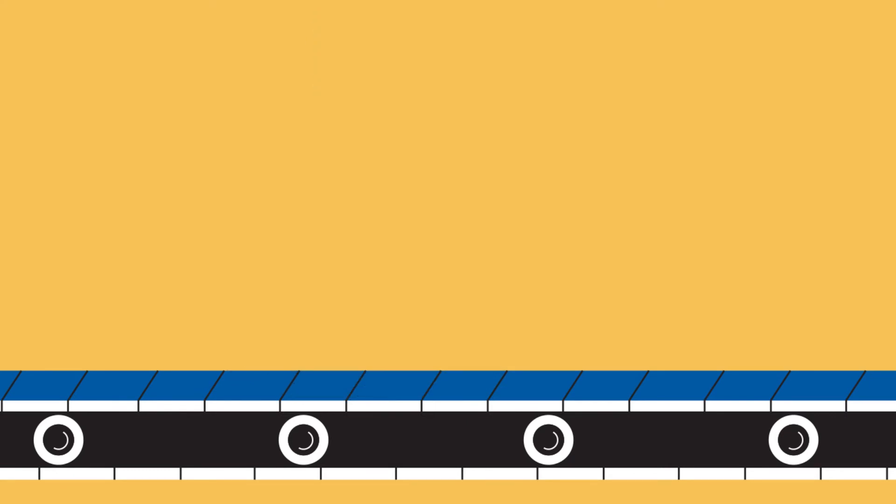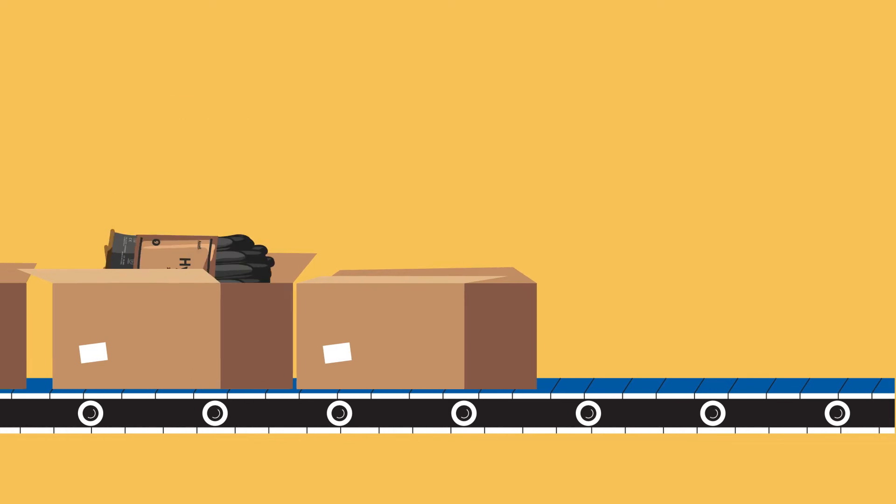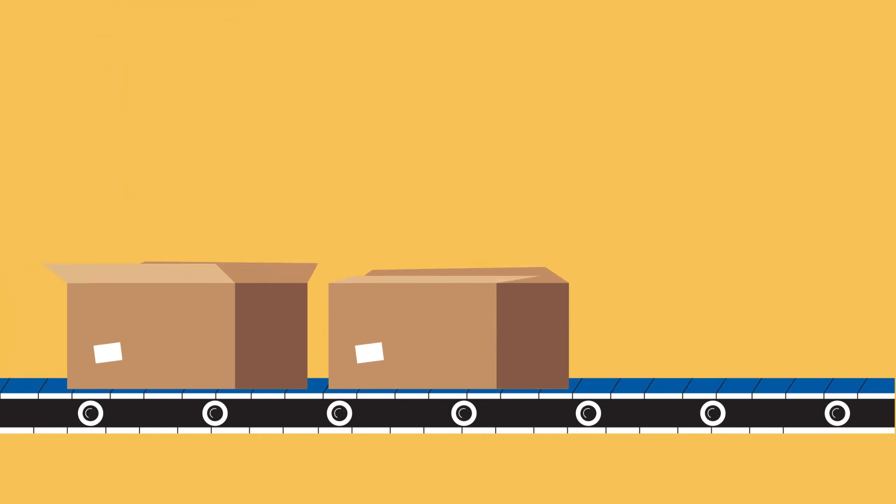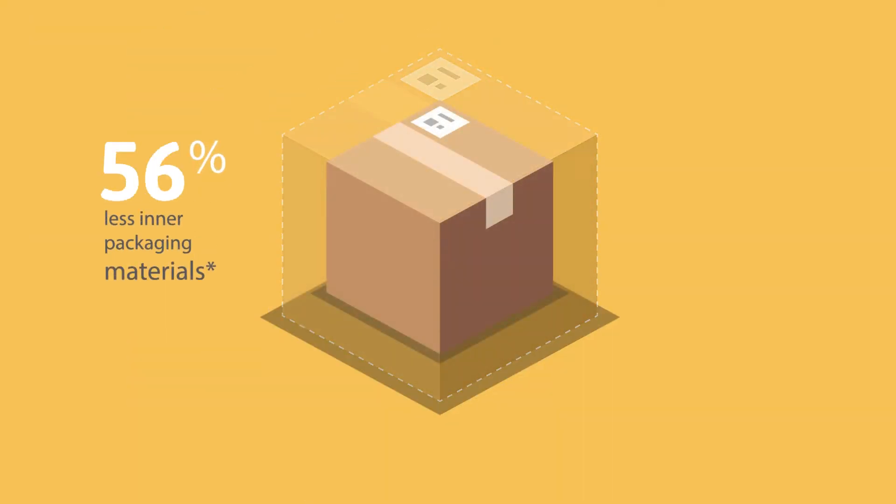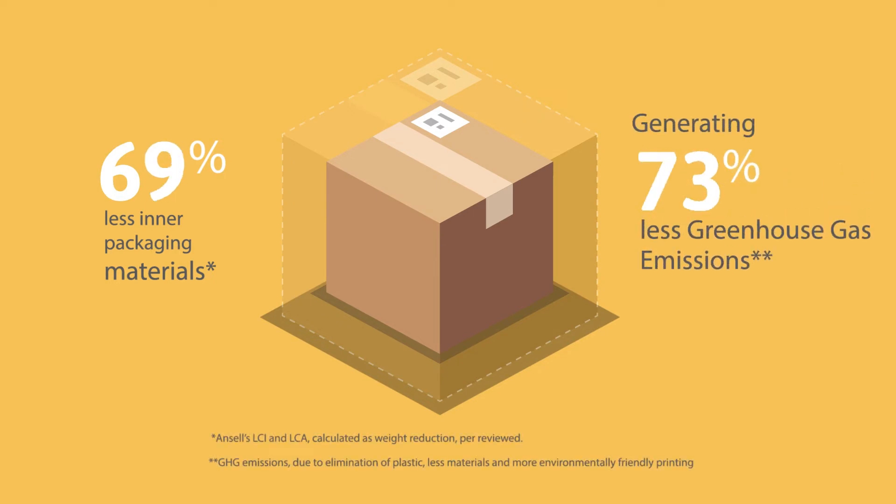Compared to the existing primary packaging, the new configuration contains 70% less primary packaging materials and generates 82% less GHG emissions due to elimination of plastic, fewer materials, and more environmentally friendly printing.